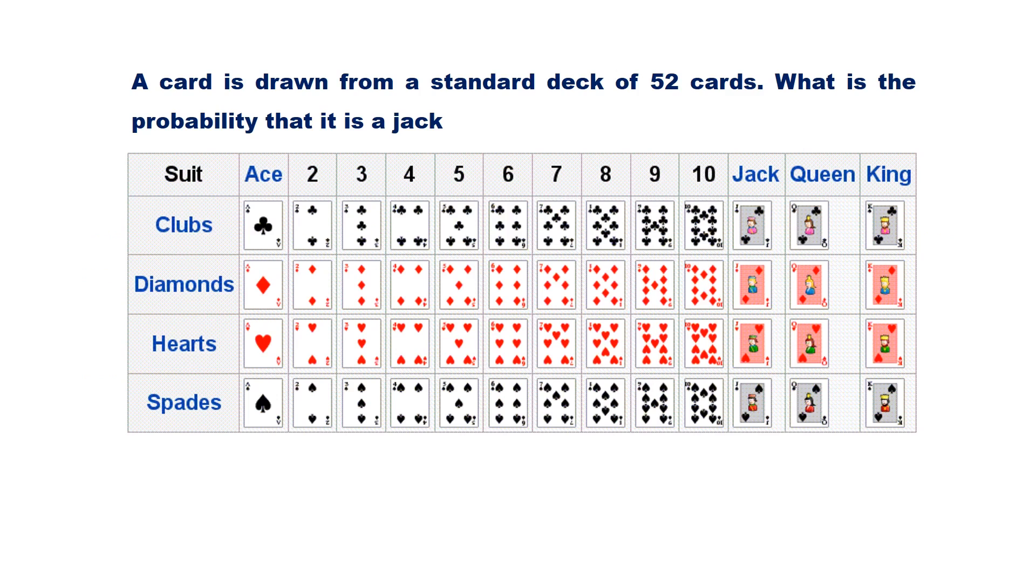A card is drawn from a standard deck of 52 cards. What is the probability that it is a Jack? There are 4 Jacks. Hence, the probability of drawing a Jack is 4/52 = 1/13.